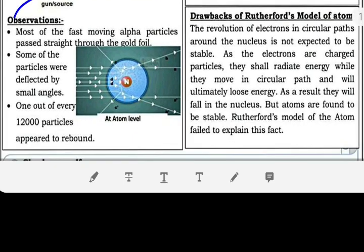So observations were: Most of the fast moving alpha particles passed straight through the gold foil. Some of the particles were deflected by small angles. One out of every 12,000 particles appeared to rebound.